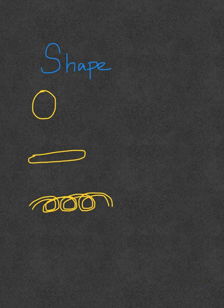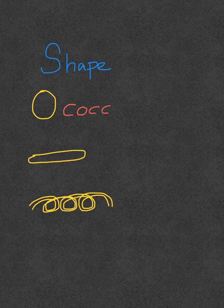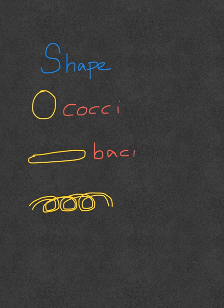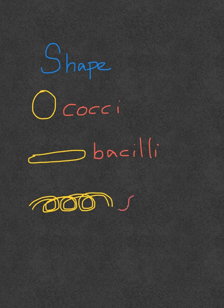The shape of prokaryotes can be round as in cocci, can be rod-shaped as in bacilli, or helical as in spirilla.